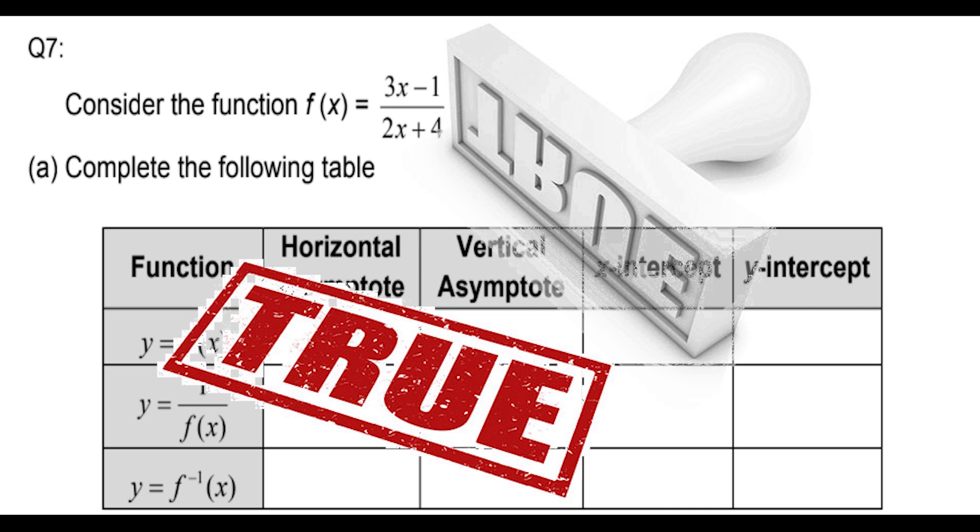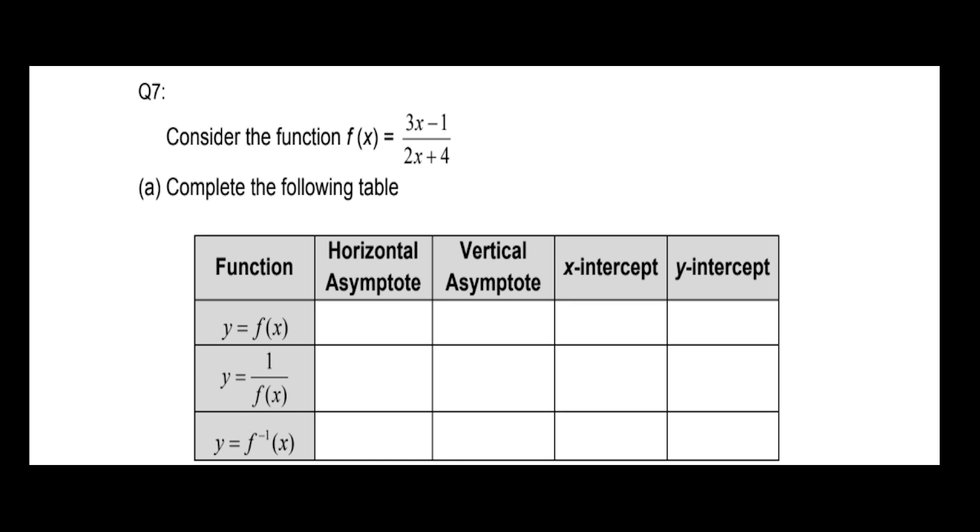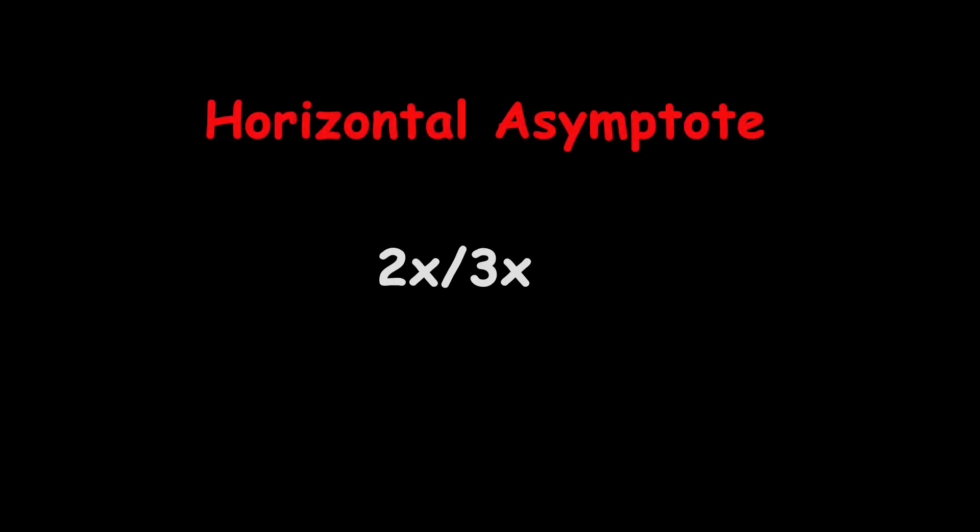Furthermore, 1 by f(x) is obviously not equal to the inverse of f(x), so we need to solve for it separately. 1 by f(x) in this case will be equal to (2x + 4) / (3x - 1). This means that the horizontal asymptote will be 2x divided by 3x, which gives us the horizontal asymptote as y = 2/3.